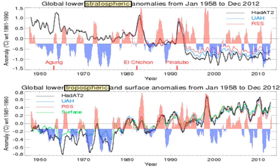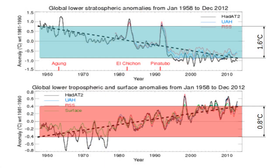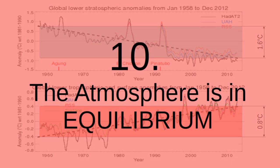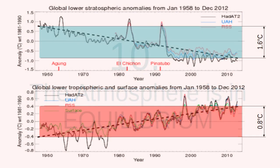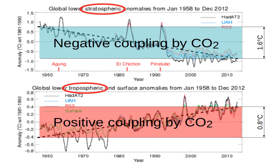There is a clear correlation between El Niño and La Niña and climate change for the troposphere and ground level. The surface level temperatures are climbing, and the temperatures of the stratosphere — the higher atmosphere — are dropping. And the scales on the y-axis, again, are not the same. There is a clear negative coupling by CO2 in the stratosphere and a clear positive coupling by CO2 in the troposphere.